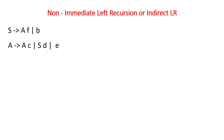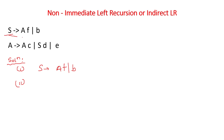Now let's see some examples. Grammars are given to us — let's assign serial numbers to them and solve. For the first grammar, S = AFB. For the second grammar, S appears inside it, so S can repeat — this is indirect recursion. The second grammar has an immediate recursion, so we have to solve it.